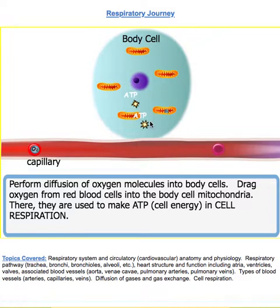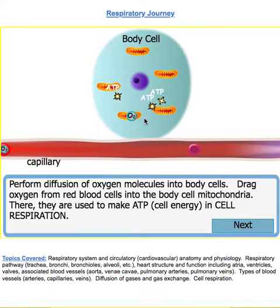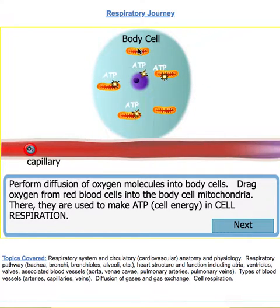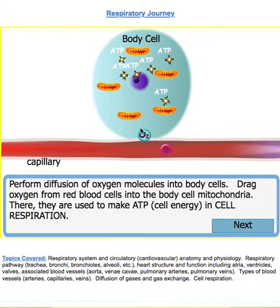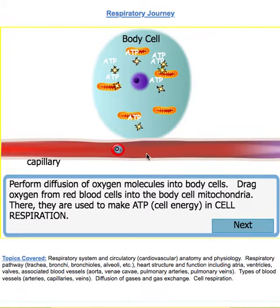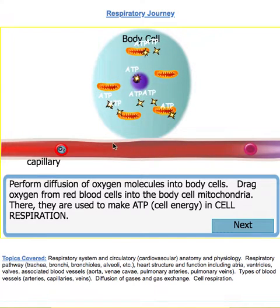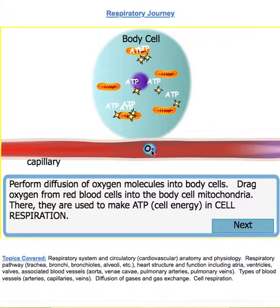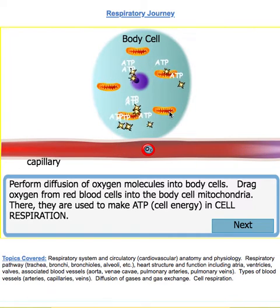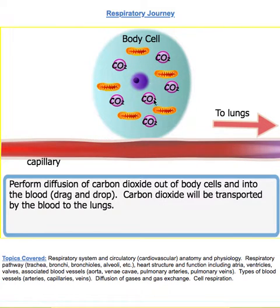Oxygen is going to diffuse off into the cell, and look what's being produced — ATP in the mitochondria. You can drag and drop the oxygen right onto the mitochondria. All those little structures are mitochondria, and they're producing ATP from the oxygen and the sugar. Sugar is also being transported by the bloodstream into the cell and then into the mitochondria. At the same time as they're producing ATP, they're releasing carbon dioxide through cellular respiration. That's a waste gas — we have to get rid of it.